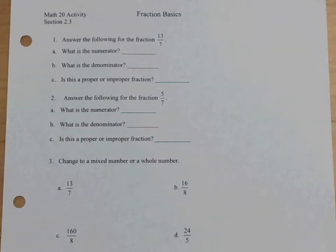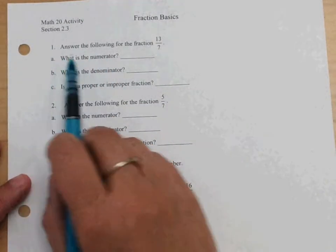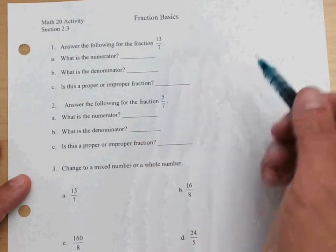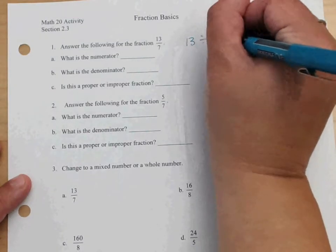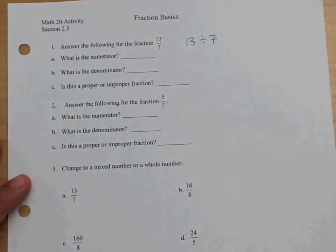Let's talk about improper fractions and mixed numbers. If we look at this fraction right here, 13/7, this is really the same thing as 13 divided by 7. That's all 13 sevenths is. It's a division problem.